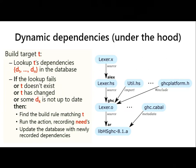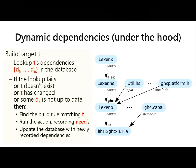How does Shake handle this? Shake stores dependency information in a persistent database containing the dependency graph from the previous successful build. When you want to build a target, you look up its dependencies in the database. If the lookup fails because you've never built this target, you just build it. If it succeeds, you get the list of previous dependencies. Then: if the target doesn't exist, you rebuild; if it changed, you rebuild; if any dependency is out of date, you rebuild. To rebuild, you find the matching rule, run the corresponding action, and record all the 'need' calls made — those are the newly discovered dependencies. You then update the database with the newly recorded dependencies.